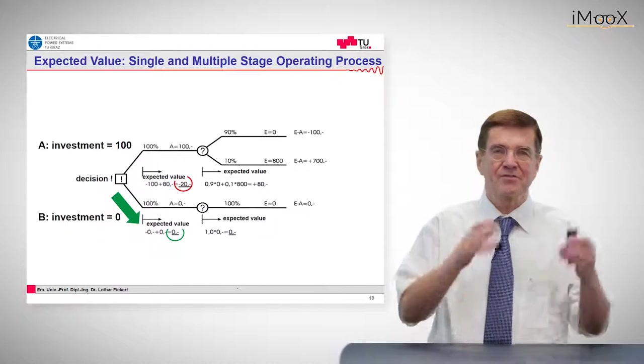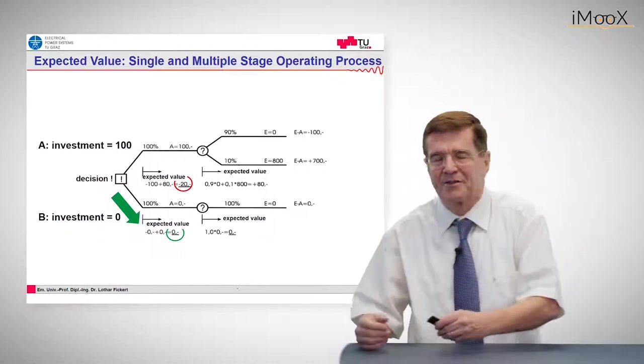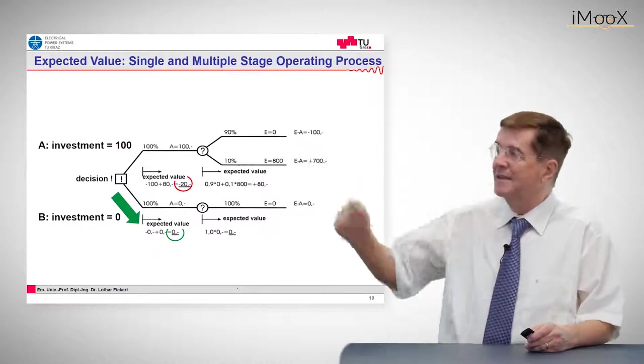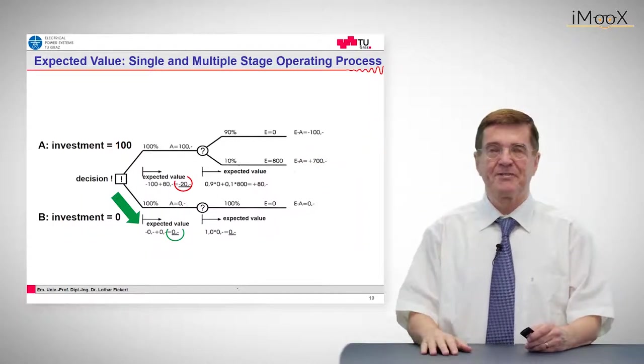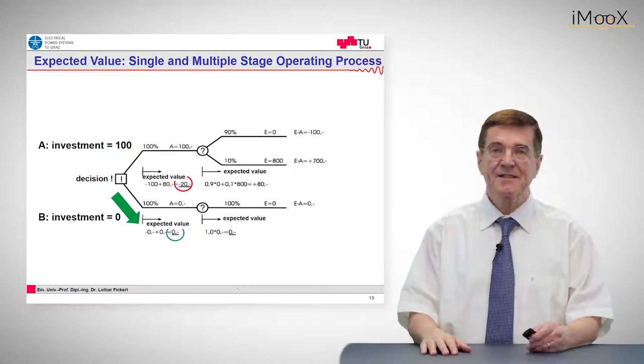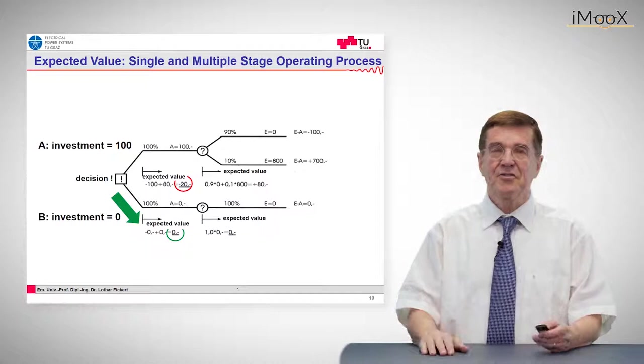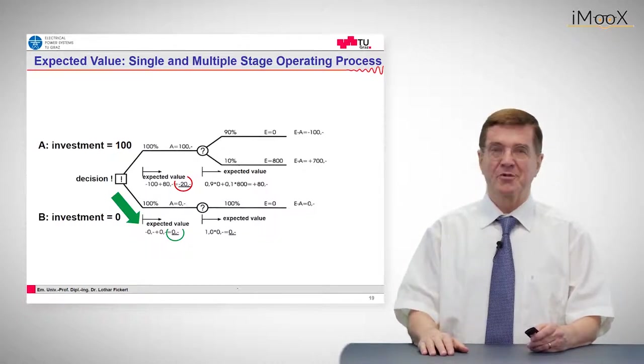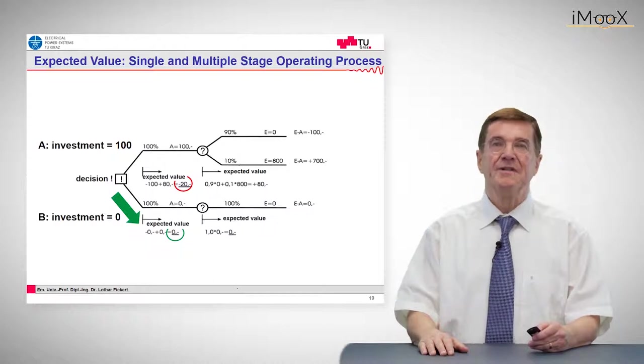If you combine these - to buy a lot or not to buy a lot - then we have two expected values. The upper path here shows the expected value of buying a lot is minus 20 units, and the other solution not to buy a lot at all is zero. In this case it would be wiser not to buy a lot.